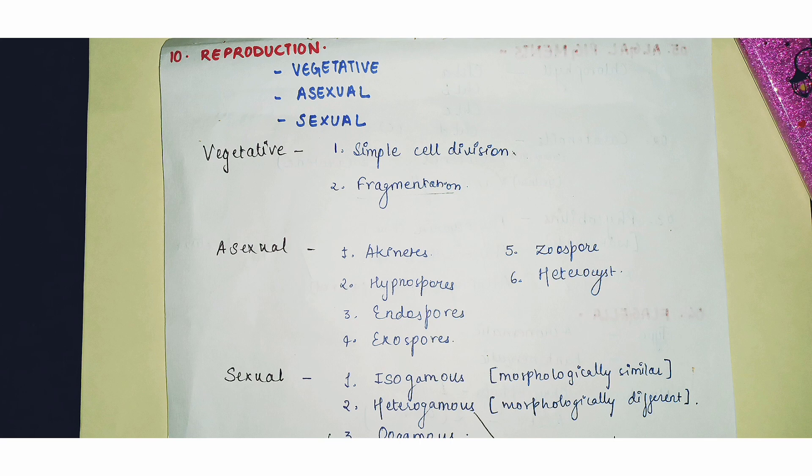The last characteristic is reproduction in algae, which is of three types: vegetative, sexual, and asexual. Within vegetative reproduction, the simplest is simple cell division — very common among unicellular algal forms — where a single cell divides into two daughter cells, which then mature and grow into new algal forms.